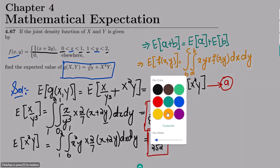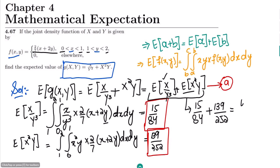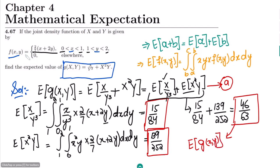Now both values are known. Adding them: E[g(x, y)] = 15/84 + 139/252. Finding the LCM and simplifying gives the final answer of 46/63. This is the expected value of g(x, y). If you have any questions, ask in the comment box.